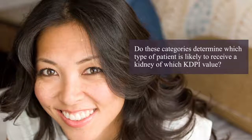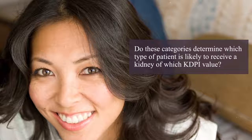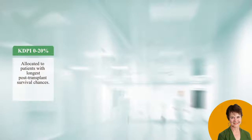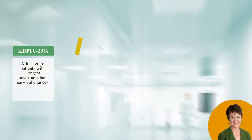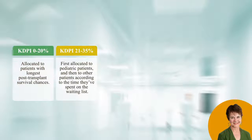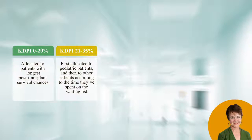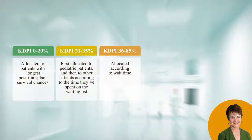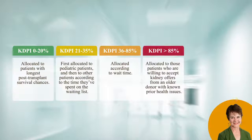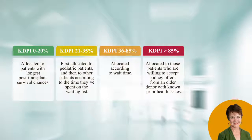Do these categories also determine which type of patient is likely to receive a kidney of which KDPI value? In a manner of speaking, yes. A deceased donor kidney with KDPI of 0 to 20% is generally allocated to patients with the longest post-transplant survival chances. A kidney with KDPI of 21% to 35% is first allocated to pediatric patients and then to other patients according to the time they've spent on the waiting list. A kidney with KDPI of 36% to 85% is allocated according to wait time. And a kidney with KDPI of more than 85% is allocated to those patients who are willing to accept kidney offers from an older donor with known prior health issues.